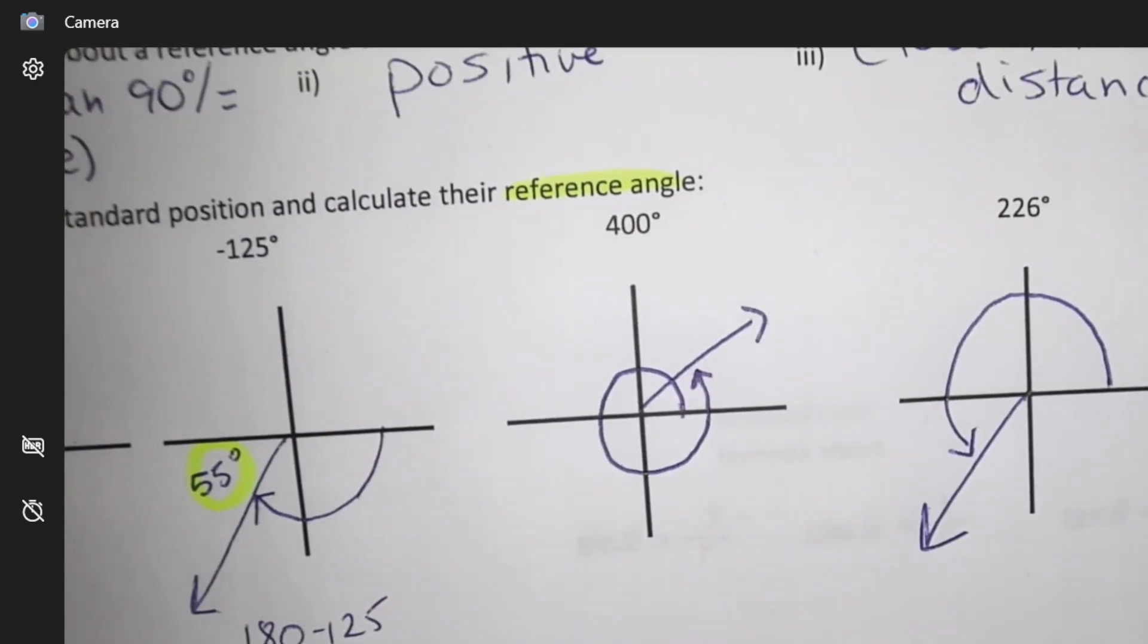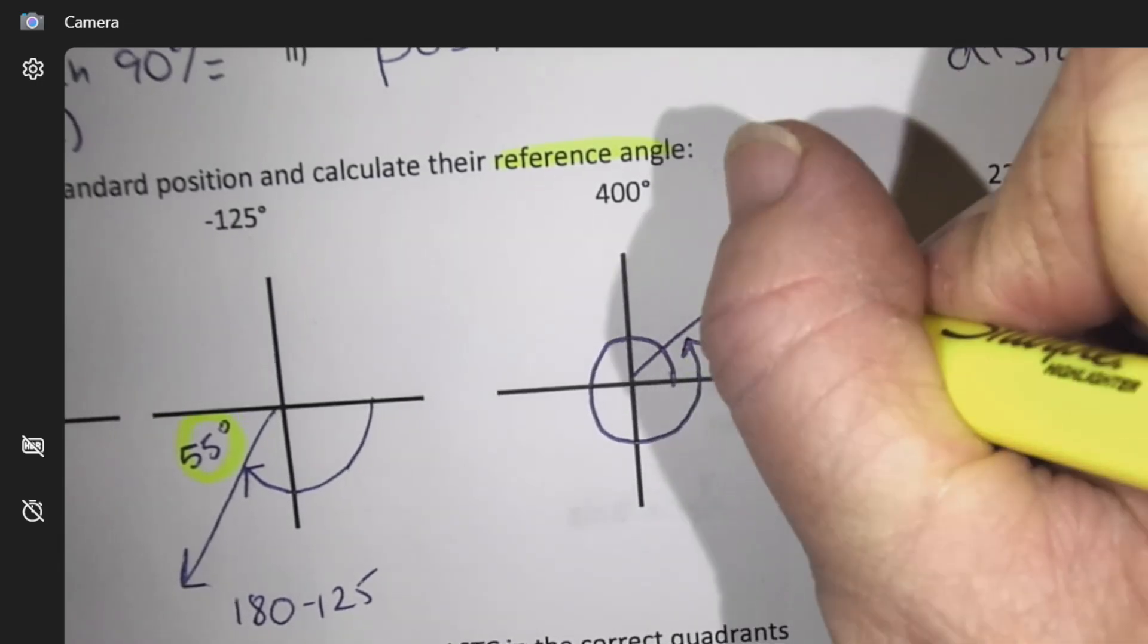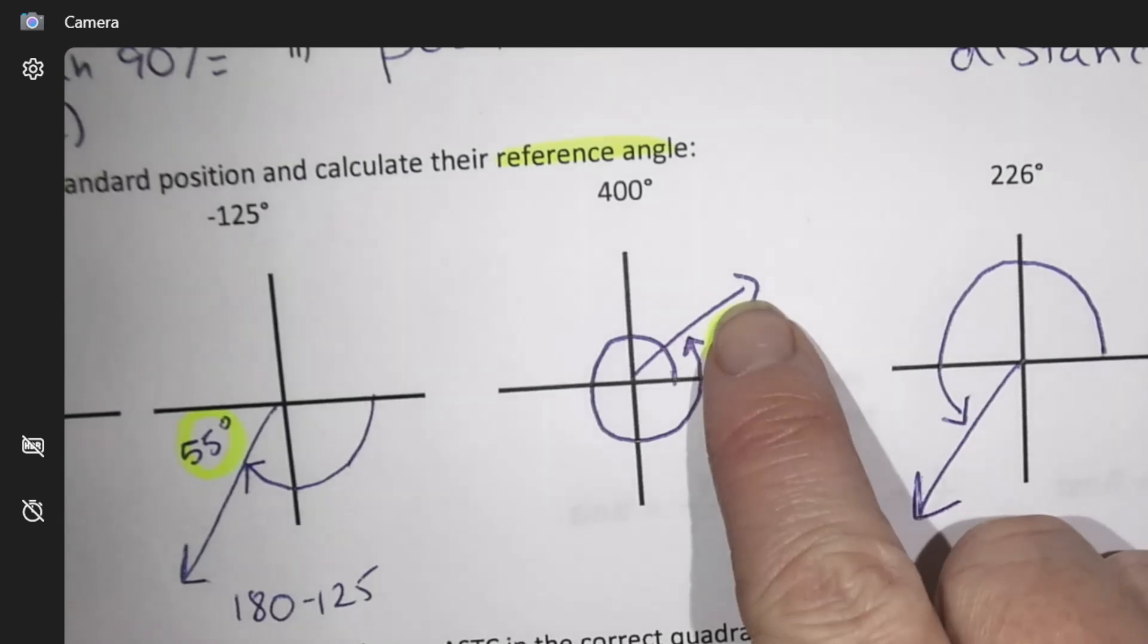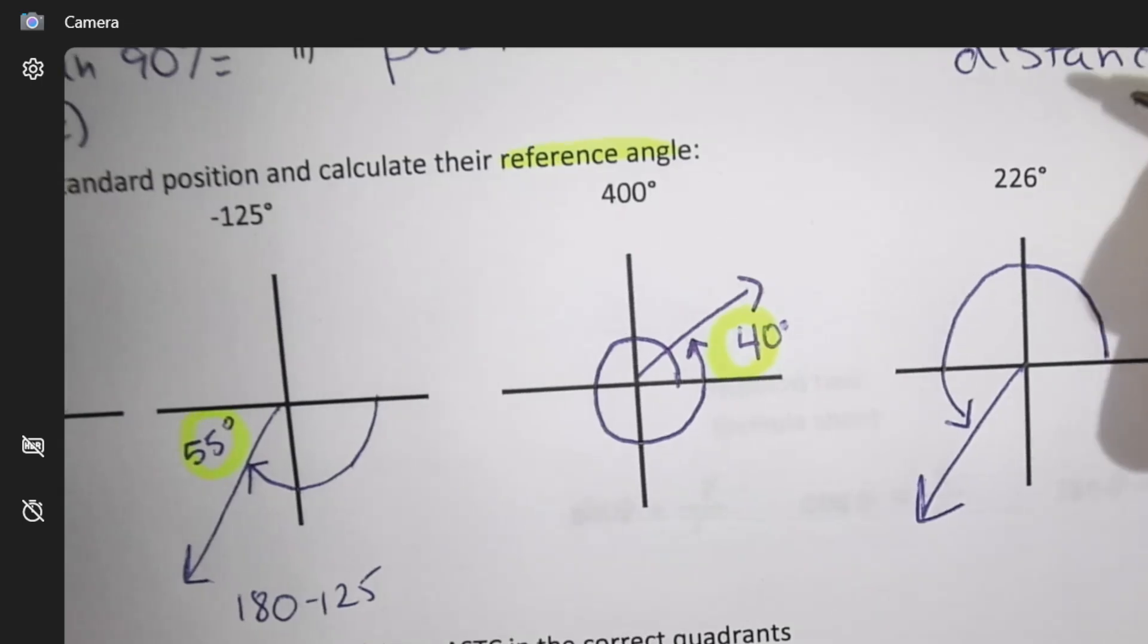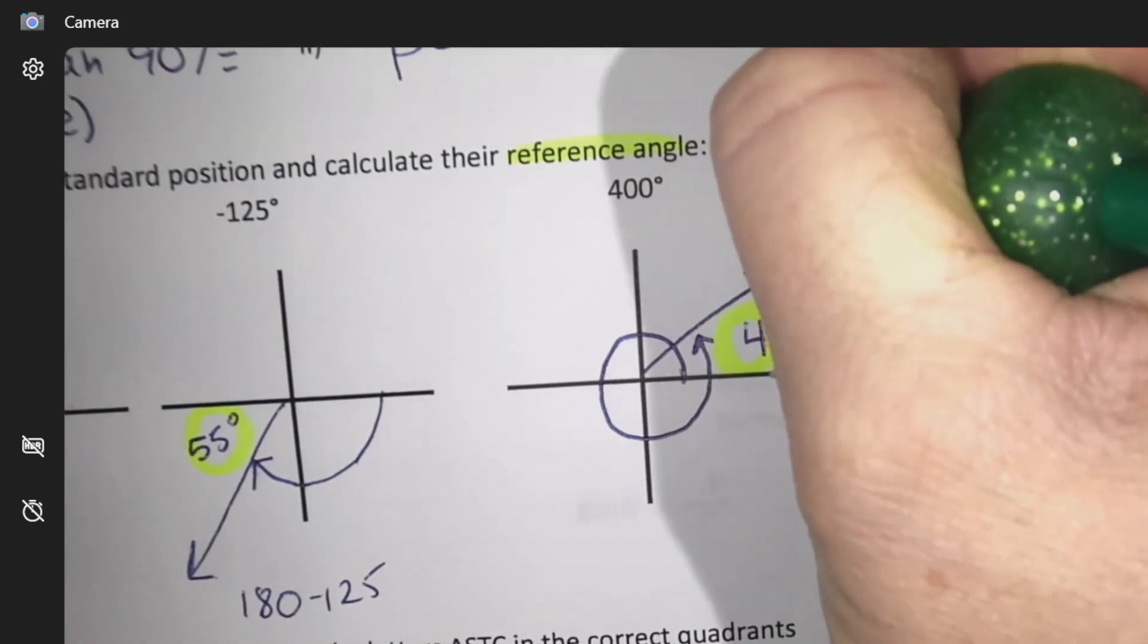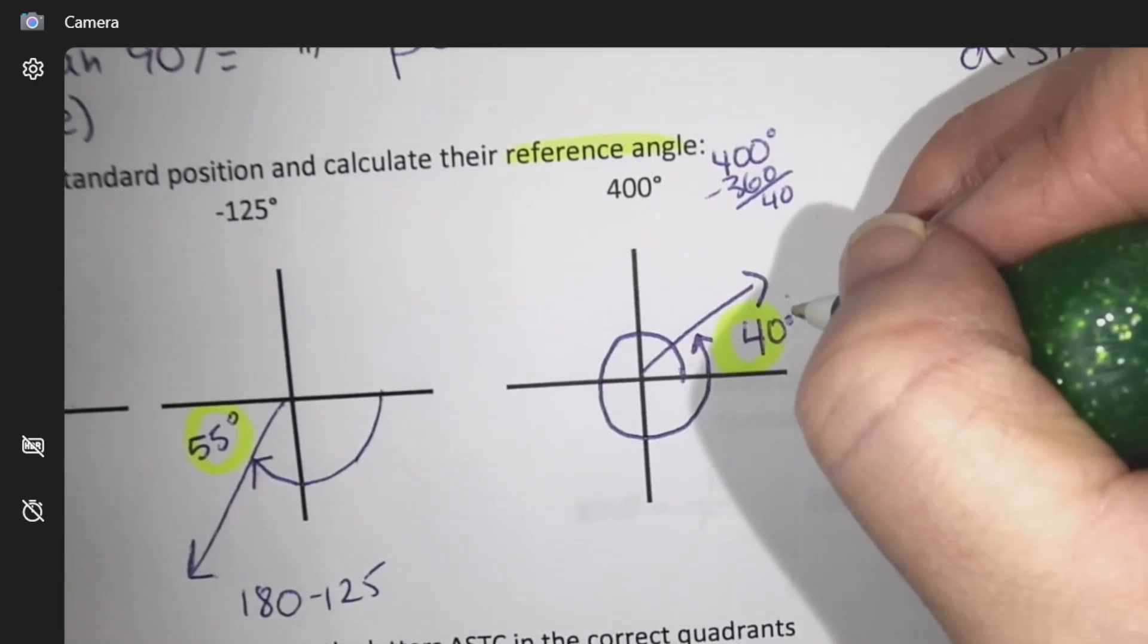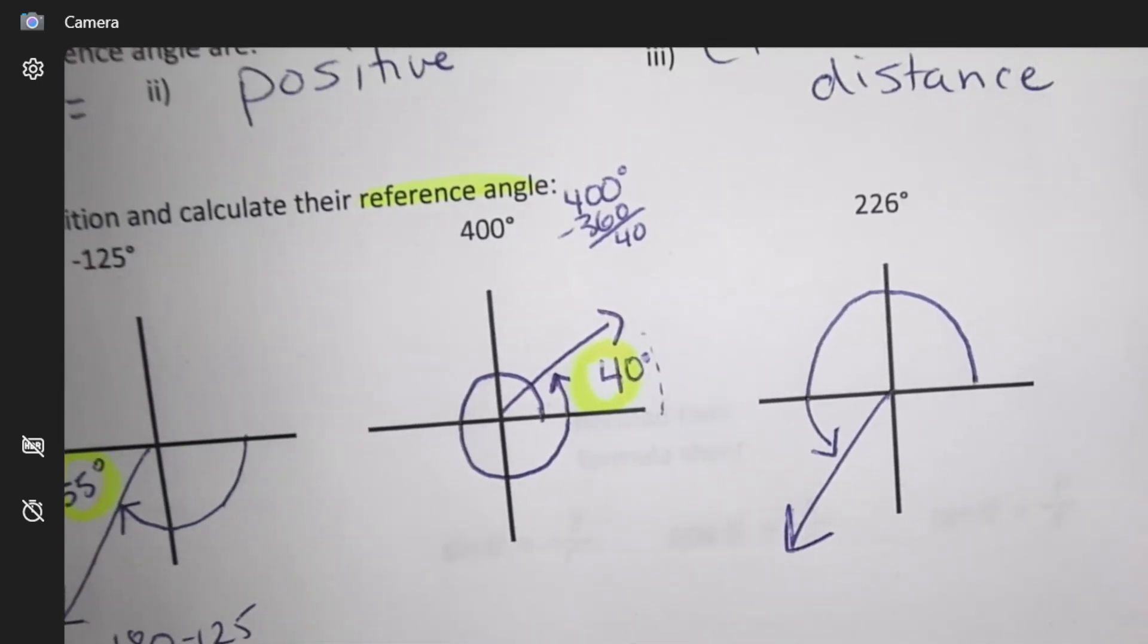Number three, where would I be looking? I need where I am to the closest x-axis, so that's the space I'm thinking about. How much space is there from here to that arm? 40. There's 40. We talked about that before, where we did 400 minus 360 means we went 40 extra. So if we went 40 extra, there's just 40 in there.